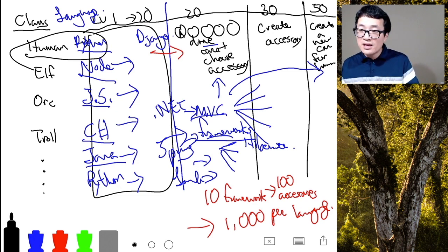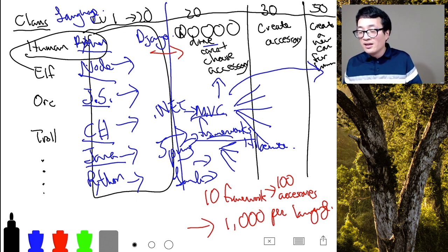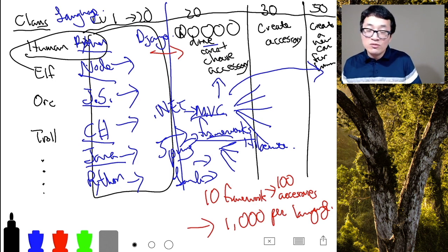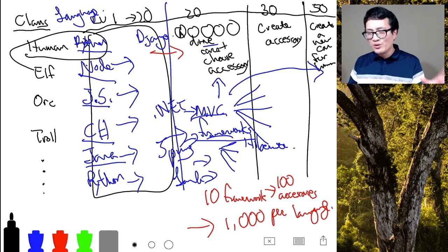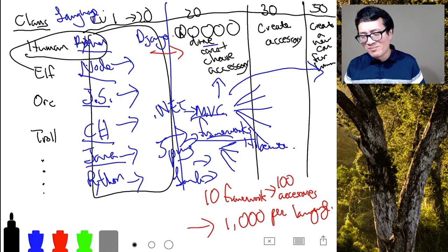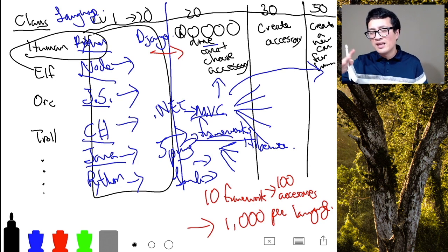My personal opinion: focus on the fundamentals — understand the frameworks, and don't pay too much attention to the accessories that just look cool. Focus on getting up to level 50 as quickly as you can, where you can create a framework from scratch within a few days. Once you reach that mastery, you'll be able to look at any tool and say 'that's an accessory' or 'that's a framework' — and you can create it too. You'll become not only programming-language agnostic but also framework agnostic.